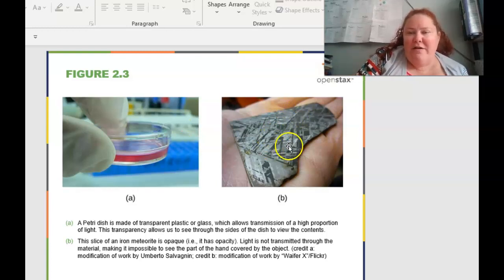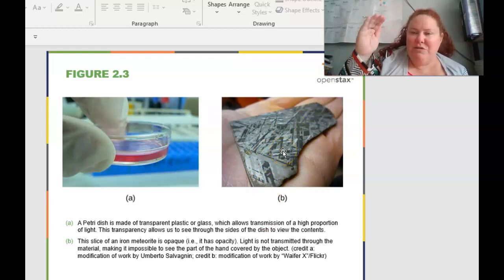Where we have an opaque object like this meteorite, light can't pass through it with the material, so it's impossible to actually look at it on a microscope with light passing through. So this one, we'd have to use SEM or TEM or a dissecting scope in order to actually see what's going on.